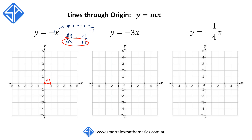But this time Δy is negative 1, which means we're going to go down by 1 unit — and that's our next point. We then join them up to get the graph y is equal to negative x.